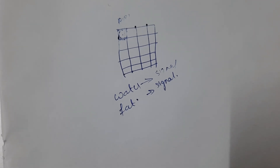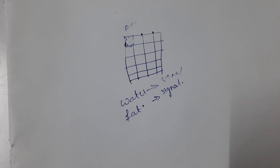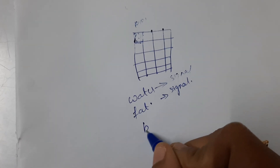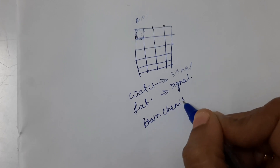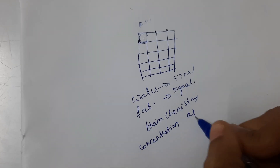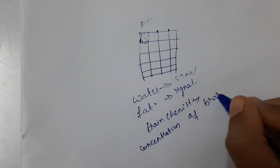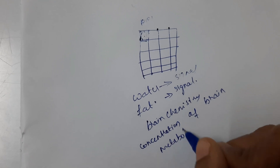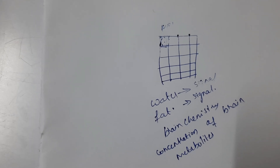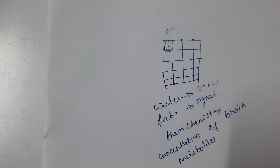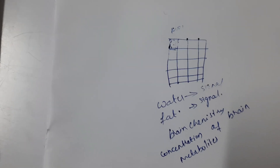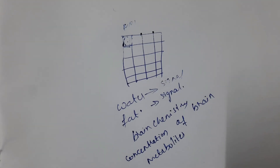In normal MRI imaging, we try to obtain anatomical images of the brain, whereas in MR spectroscopy, we try to obtain the brain chemistry or the concentration of brain metabolites. These metabolites include NAA, choline, myoinositol, etc. All these are the metabolites that we try to measure in MR spectroscopy.